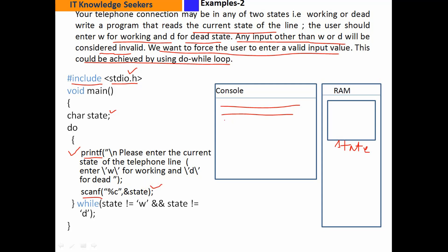अगर मैं enter करता हूँ invalid input जैसे कि 't' character — t लिखकर enter किया तो यह t इस variable में जाके store हो जाएगा address of state पर। t not equal to W — condition true, t not equal to D — condition true, true AND true result is true। जब while की condition true होती है तो control वापस body पर आ जाता है। दोबारा message print होगा। अगर x input दिया — x not equal to W true, x not equal to D true — body पर चला जाएगा। जब तक हम valid input नहीं देंगे loop terminate नहीं होगा।